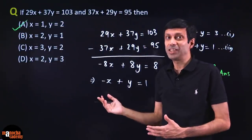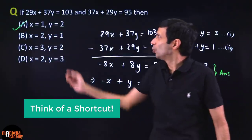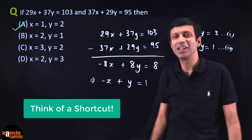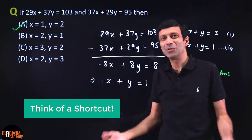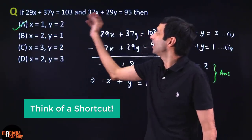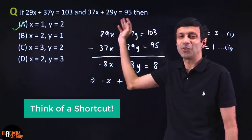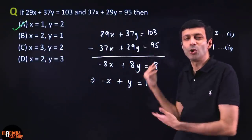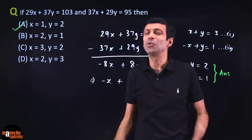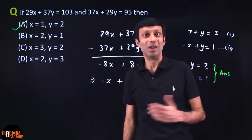Alternatively, you can use the substitution trick: just substitute the values of x and y given in each option into both equations and see which values satisfy them. Whichever method feels faster to you, use that to solve the sum quickly.